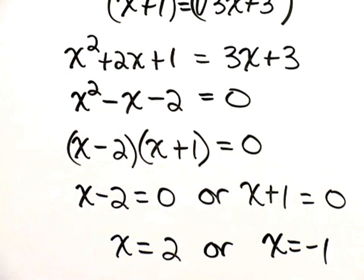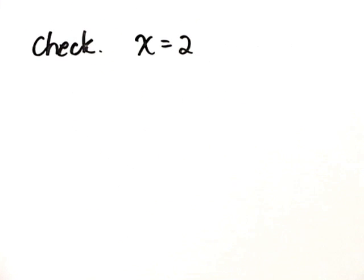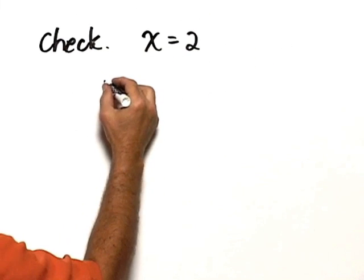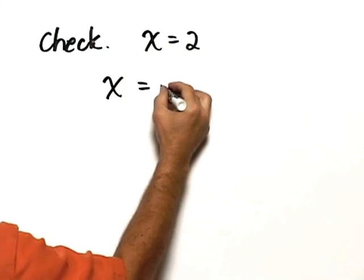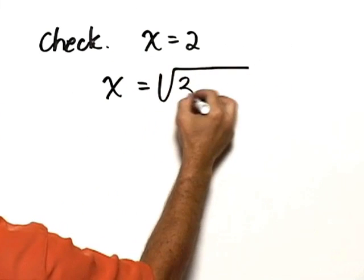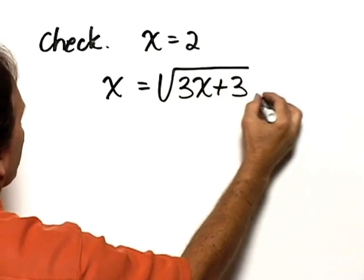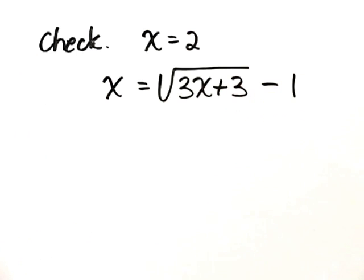Now, let's perform a check to make sure that both of these solutions work. So we have check first x equals 2. We substitute 2 into the original equation, and the original equation is x equals the square root of 3x plus 3 minus 1.